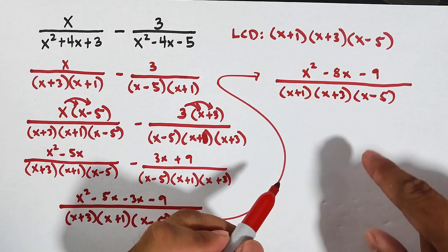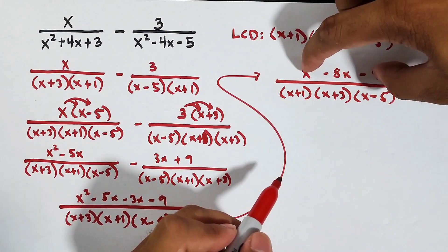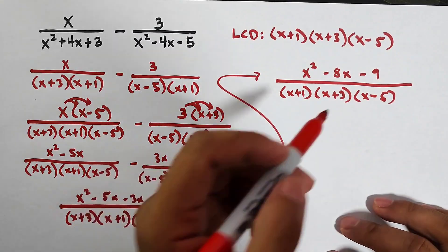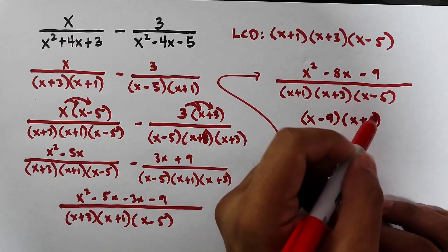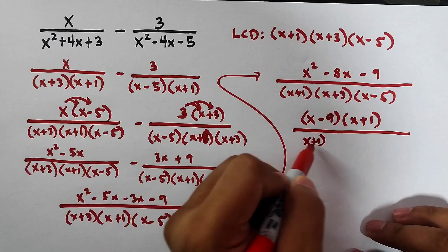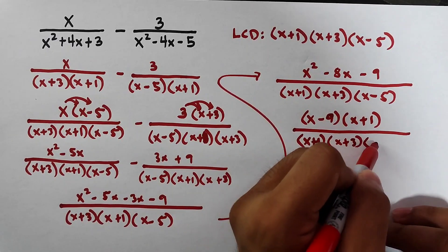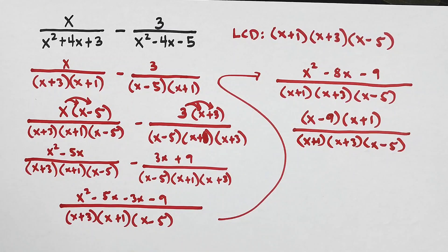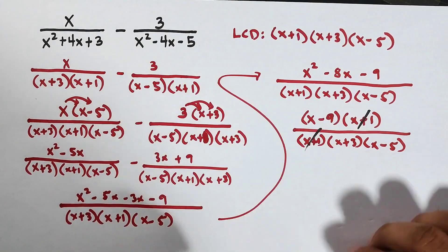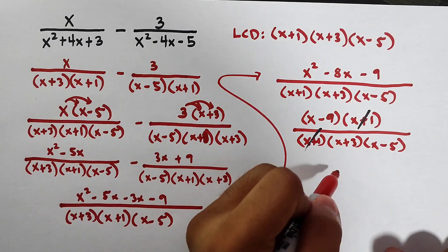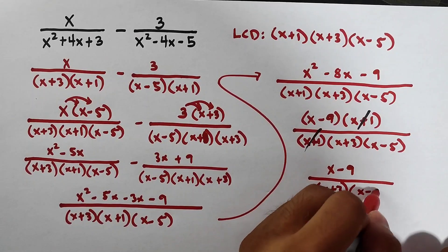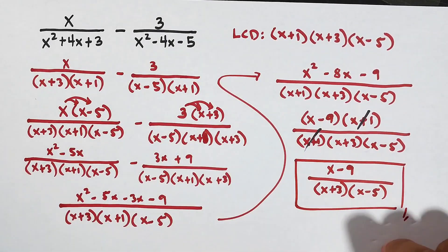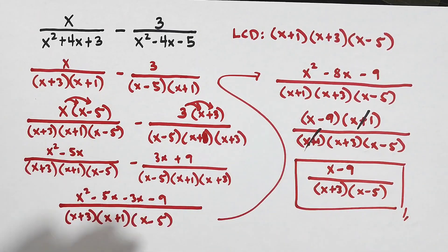The numerator is a trinomial, so let's factor it to see if we can simplify or cancel. The factors are x minus 9 times x plus 1. The denominator is x plus 1 times x plus 3 times x minus 5. As you can see, x plus 1 is common and cancels out. What remains is x minus 9 over x plus 3 times x minus 5, and this is the final answer for the third item.